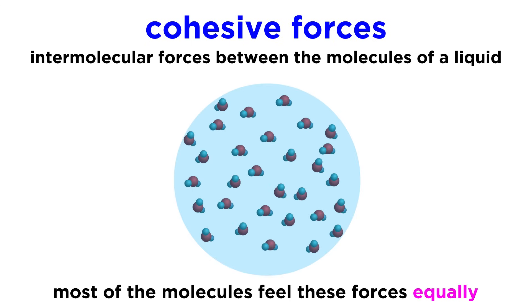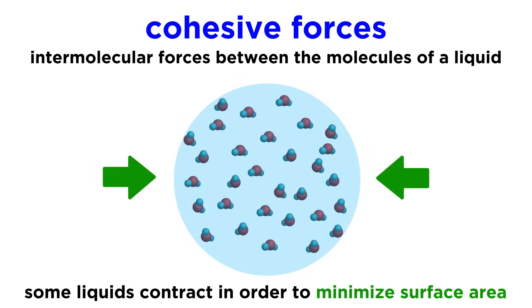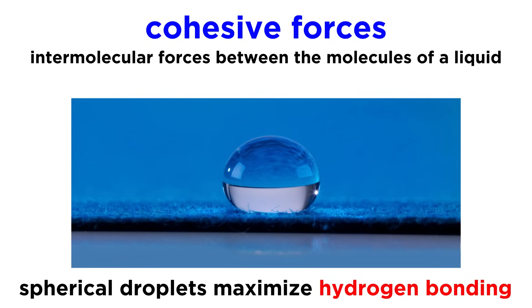In a liquid, these cohesive forces are felt equally in all directions by most of the molecules, but not for molecules that are at the surface of the liquid. These molecules only interact with half as many molecules as the others, because they are at the edge of the substance, with no more molecules to one side. This is why liquids tend to contract to form shapes that minimize their surface area. We can see this in a drop of water, which will be roughly spherical. The sphere is the shape that minimizes surface area, so a water droplet will adopt this shape to maximize the hydrogen bonding that is occurring in the droplet, allowing the system to sit at the lowest energy possible.